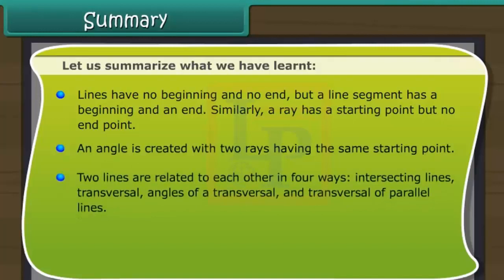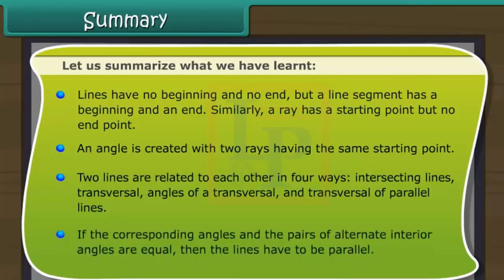Two lines are related to each other in four ways. Intersecting lines, transversal, angles of a transversal and transversal of parallel lines. If the corresponding angles and the pairs of alternate interior angles are equal, then the lines have to be parallel.